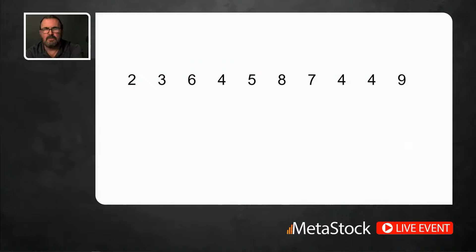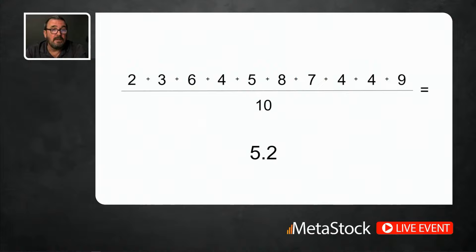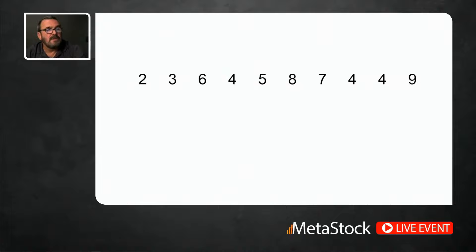Here's a set of prices. Getting an average out of any number set is pretty simple math. You just add up all of the numbers and divide that sum by 10 — so that sum is 52 divided by 10, giving you 5.2. The average of all these numbers is 5.2. If you chart that, you can quickly see that's not very helpful — it just gives you a flat line through the middle of the set. That gives you no real useful information to a trader.